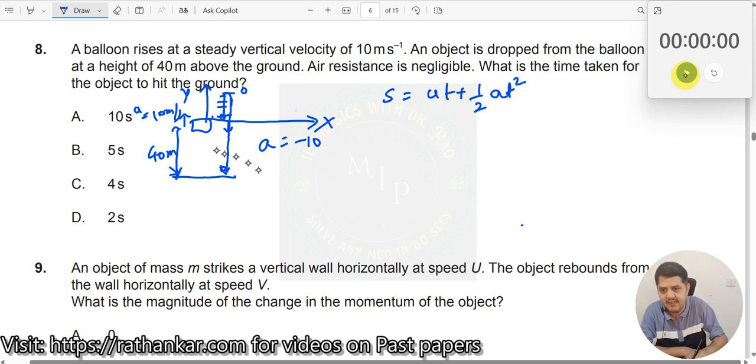What is s? s is displacement. This is your initial point, this is your final point. The displacement is 40 meters. It is not the total distance, it's displacement. In equations of motion, we only use displacement. Is this displacement positive or negative? It is negative displacement. Anything measured upwards is positive, anything measured downward is negative. You are measuring displacement in the downward direction, so this should be negative.